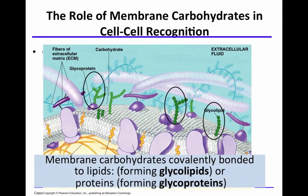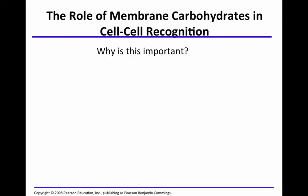Why is this important? If a membrane carbohydrate is covalently bonded to a lipid, it is a glycolipid. If a membrane carbohydrate is covalently bonded to a protein, it is a glycoprotein. Know these terms — they are in bold.